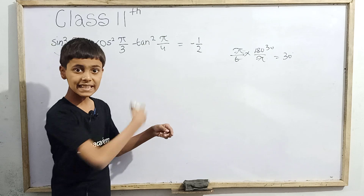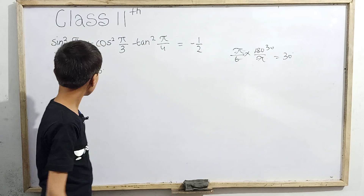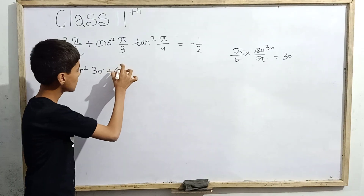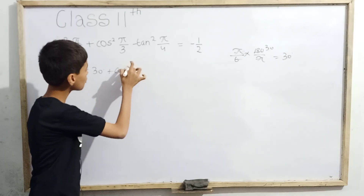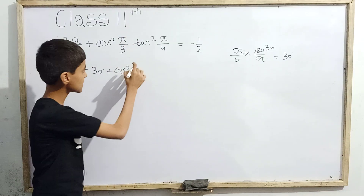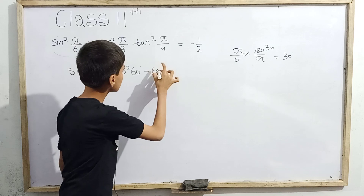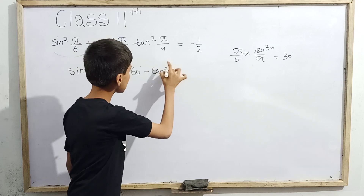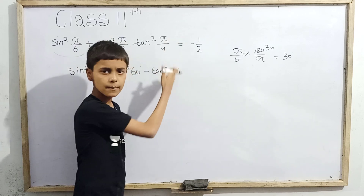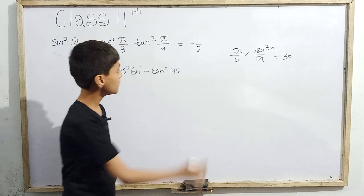So we can convert everything to degrees. We have sin²(30°) + cos²(60°) — because π/3 is 60 degrees — minus tan²(45°), because π/4 is 45 degrees. We have to prove that this equals -1/2.